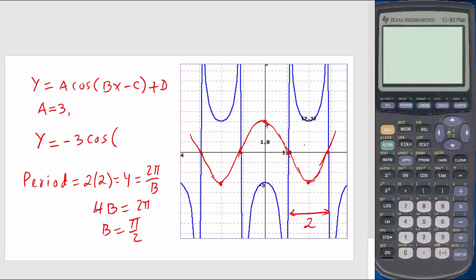And the cosine function actually, with a negative sign, it is going like this. It has a reflection.